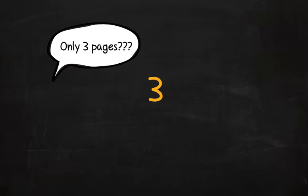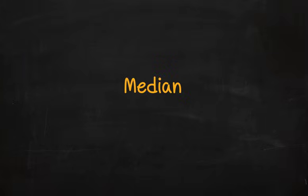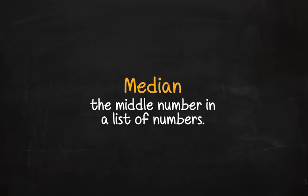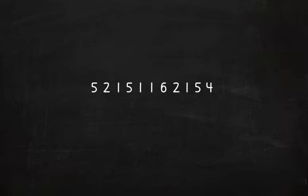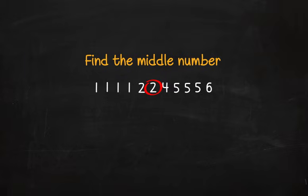The average number of pages that you read in your math book each day is 3. What? Only 3 pages? And do you know what that means? You're missing out on a lot of good math information. Anyway, let's talk about the median. The median is the middle number in a list of numbers. To find the median, first you have to put the numbers in order, then find the middle number. Counting from both ends, you'll find that the median number is 2. That means that half the days you read 2 or more pages, and the other half of the days you read 2 or less.